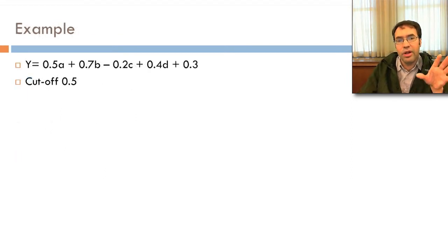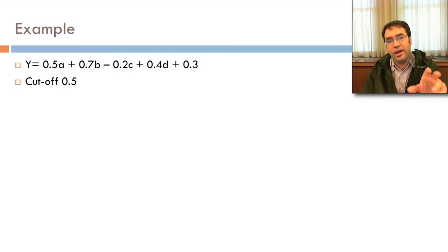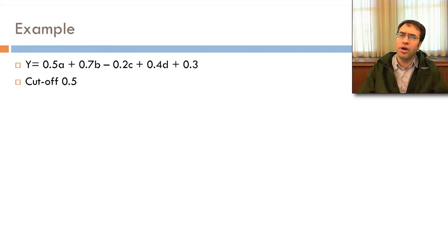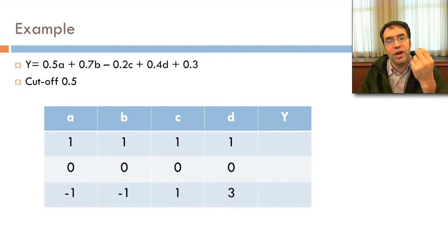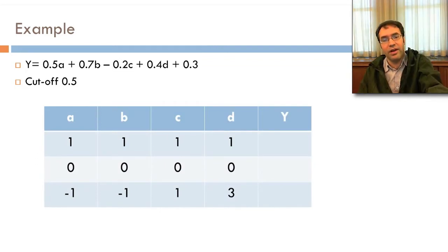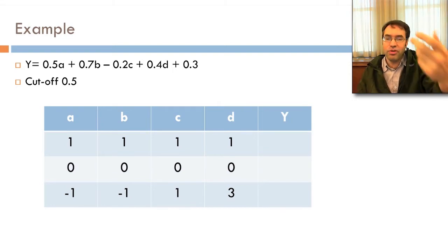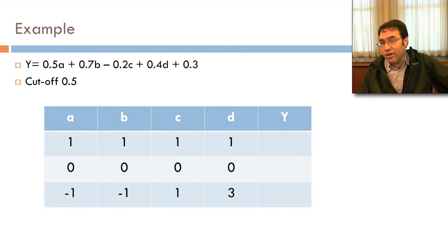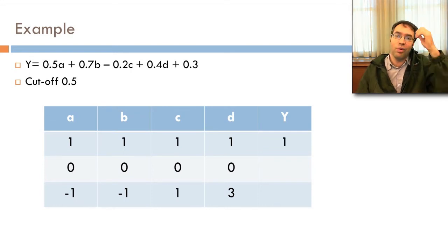For example: y equals 0.5a plus 0.7b minus 0.2c plus 0.4d plus 0.3, and our cutoff is 0.5 — the most common cutoff. If the values of a, b, c, and d are all 1, then 0.5 times 1 is 0.5, plus 0.7, minus 0.2, plus 0.4, plus 0.3 equals 1.7, which is greater than 0.5, so the result is 1.